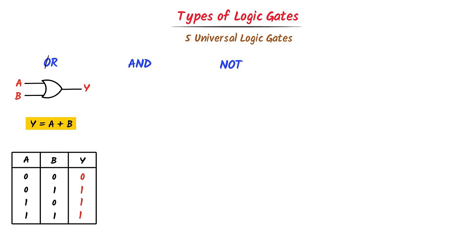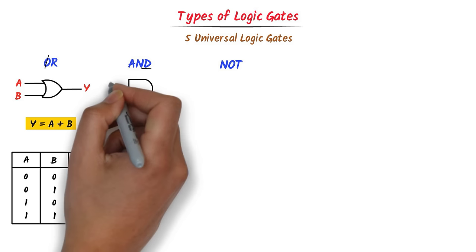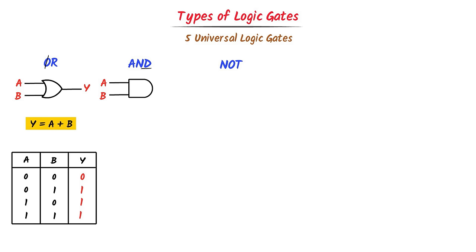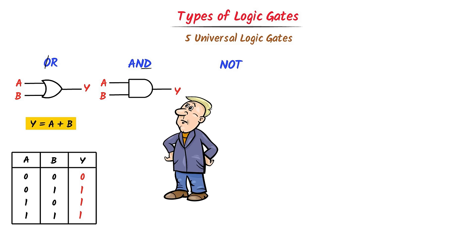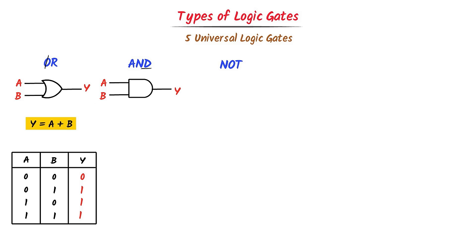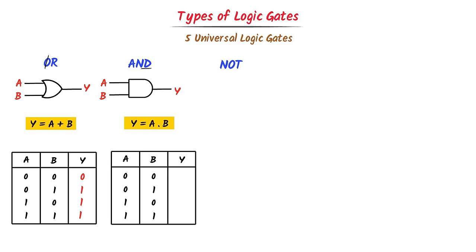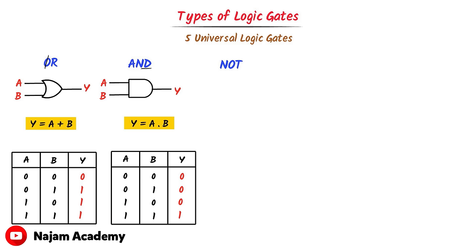Second, the AND gate: I draw its symbol like a T shape. I give two inputs A and B, and get output Y. The AND gate multiplies the inputs, so Y equals A dot B. The truth table: 0 times 0 equals 0, 0 times 1 equals 0, 1 times 0 equals 0, and 1 times 1 equals 1. This is the truth table of the AND gate.